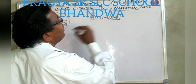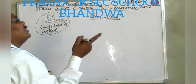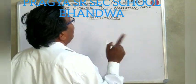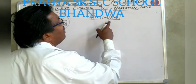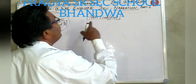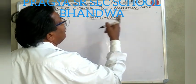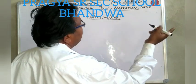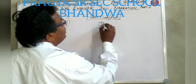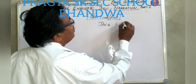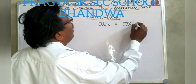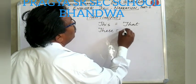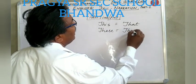Adverbs of time or place showing nearness will be changed into adverbs of time or place showing distance. For example: 'this' will be changed into 'that'. 'These' will be changed into 'those'.